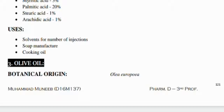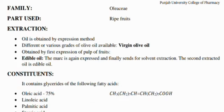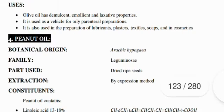Another one is olive oil, known as Olea europaea, its family is Oleaceae. Ripe fruits are the part used, and it is used as a laxative, demulcent, emollient, and for many other things.